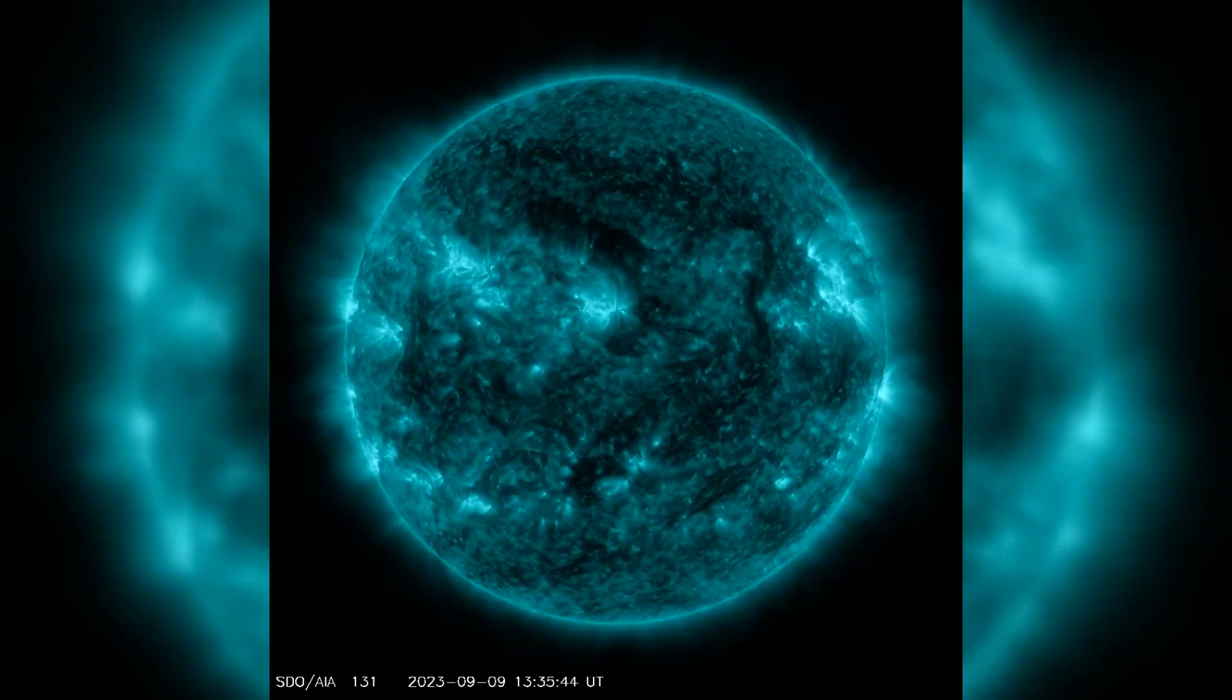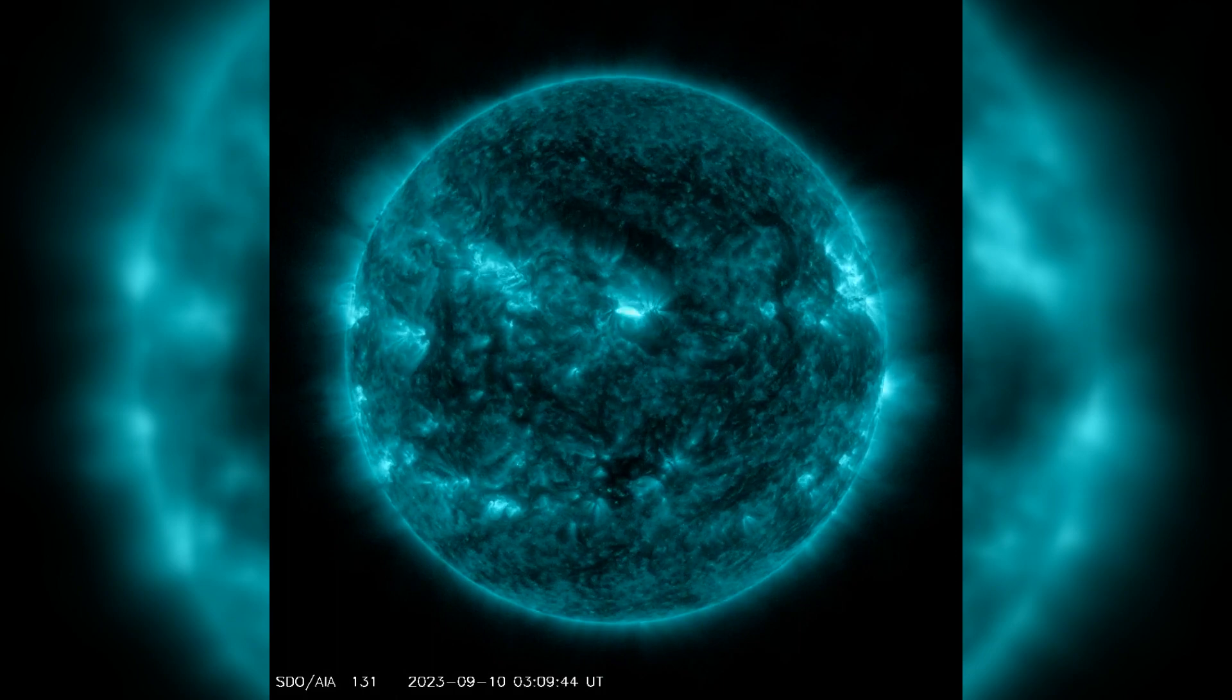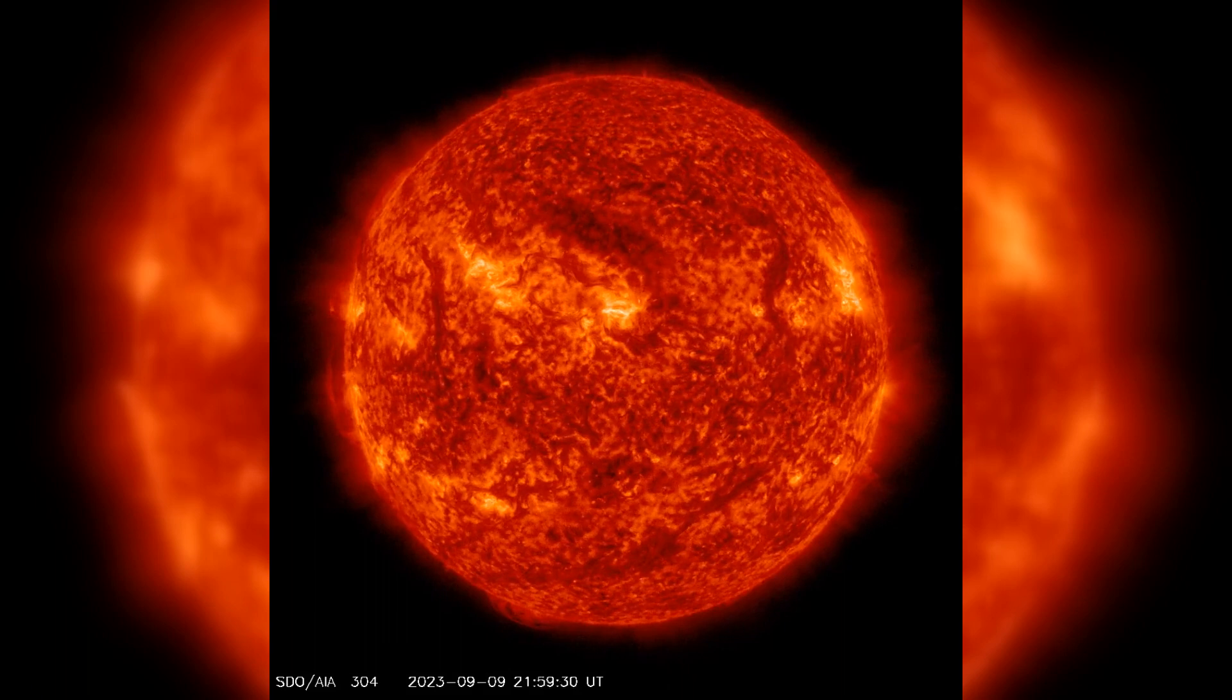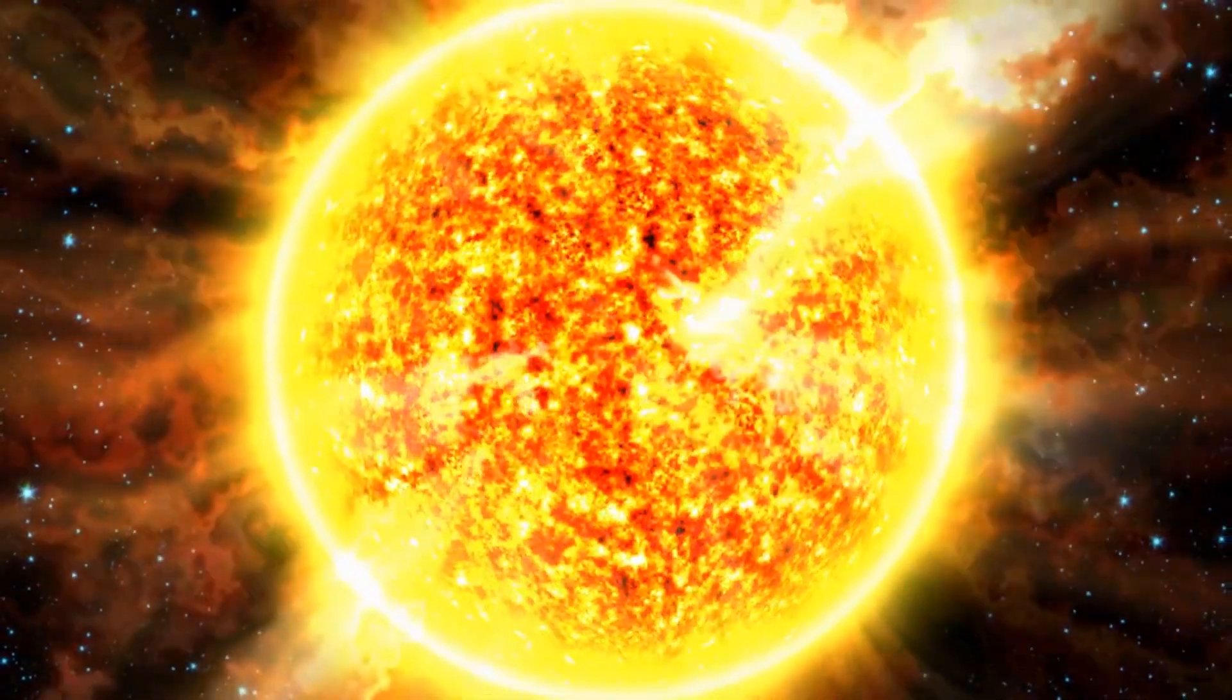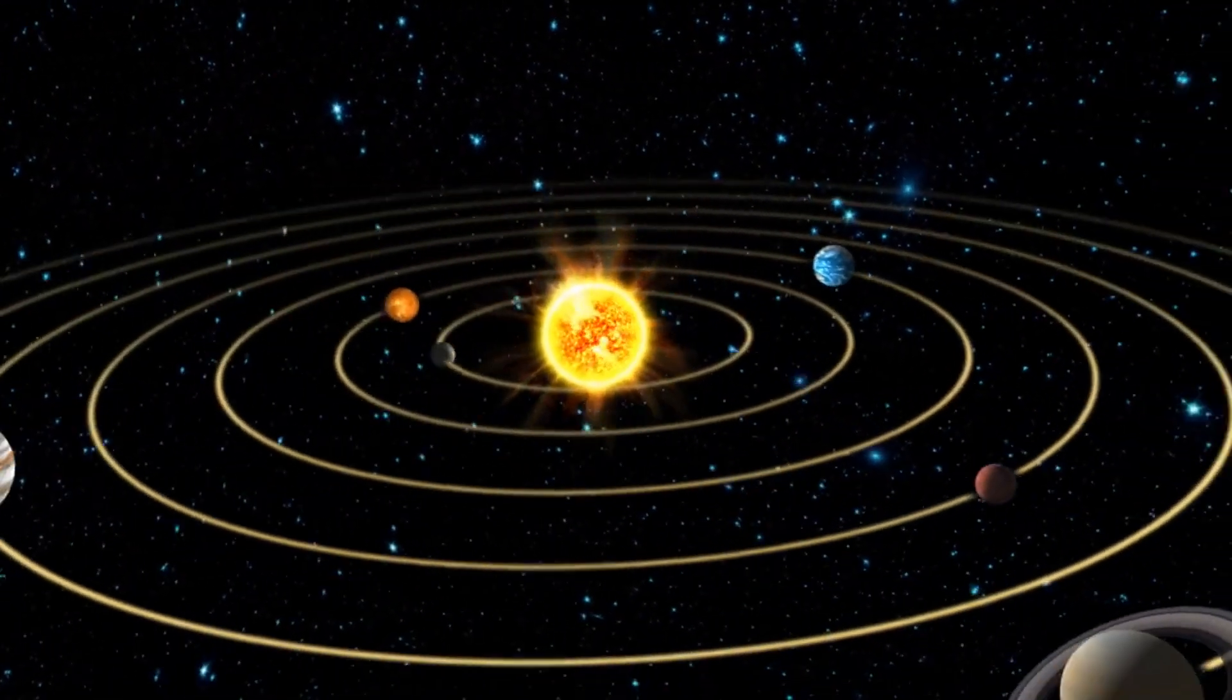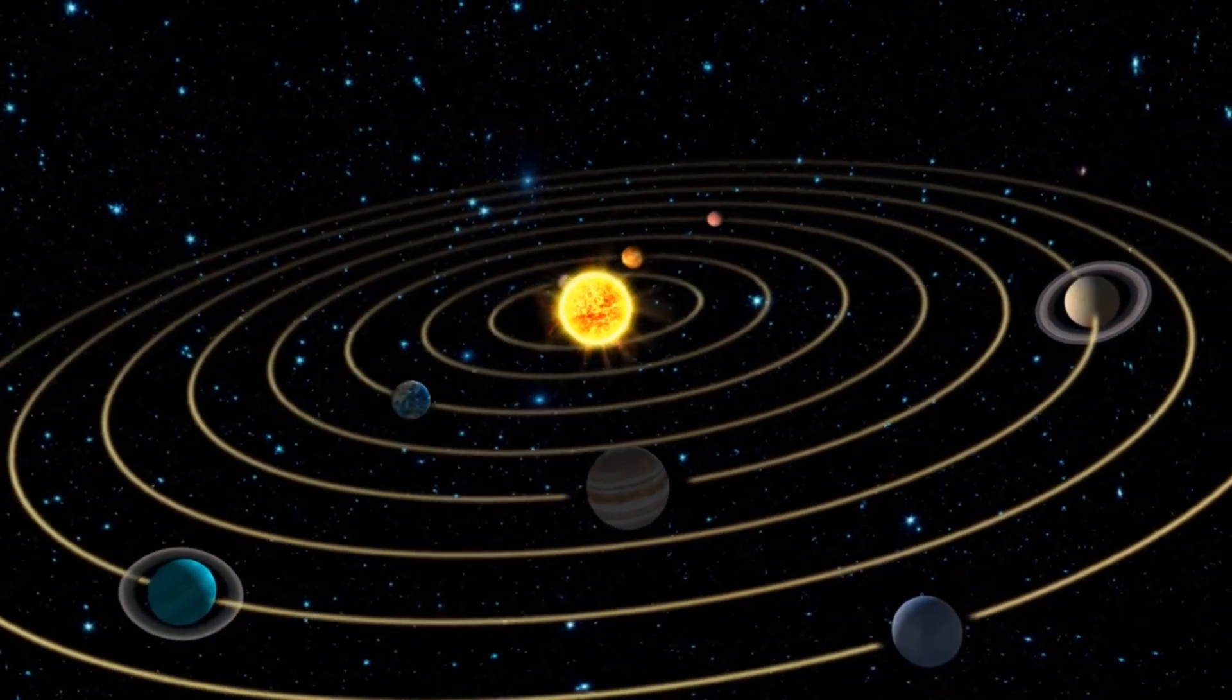Two new regions, 3428 and 3429, were identified. Fortunately, no Earth-directed coronal mass ejections were detected. Looking ahead, solar activity is expected to remain at low levels with a chance of isolated M-class flare activity until September 12.